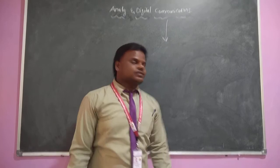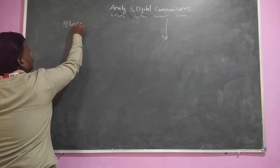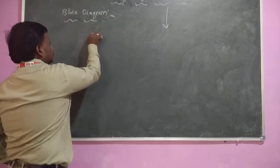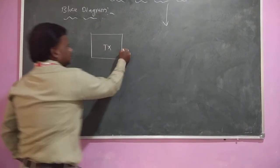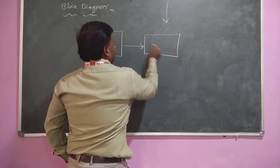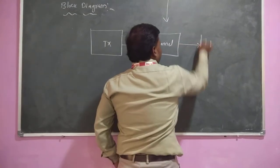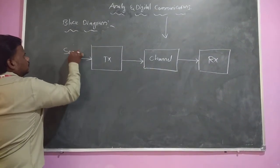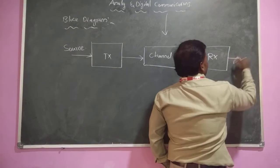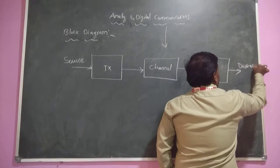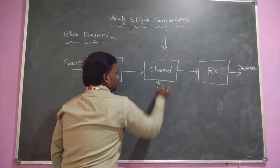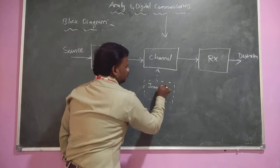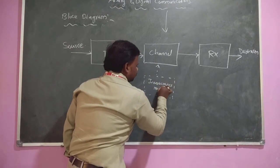The basic block diagram of the communication system is like this. So basically it consists of three parts. First one is the transmitter. The transmitter section is at the source point and the receiver section is at the destination point. So in the channel, there may be a chance of interference, noise, and distortion.